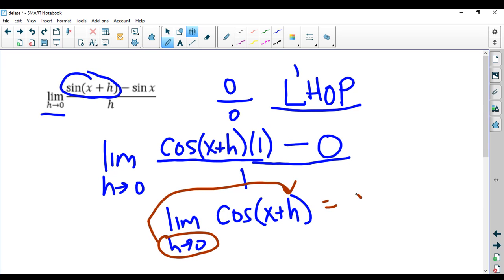And we just get the cosine of x plus zero, which is the cosine of x, which is what we said the answer was going to be. Thank you.